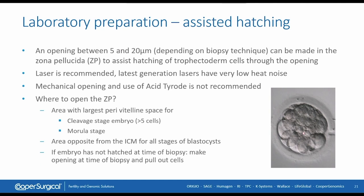We want to biopsy trophectoderm cells, and ideally the easiest way is that these cells are hatching through the zona pellucida. To obtain this, we could use assisted hatching — we will make an opening of 5 to 20 micrometers, depending on the technique used for biopsying. This opening can be made on day 3, day 4, or even the morning of day 5. Try to find a spot where the perivitelline space is still very large, so that heat noise will not damage the cells close to the opening point.